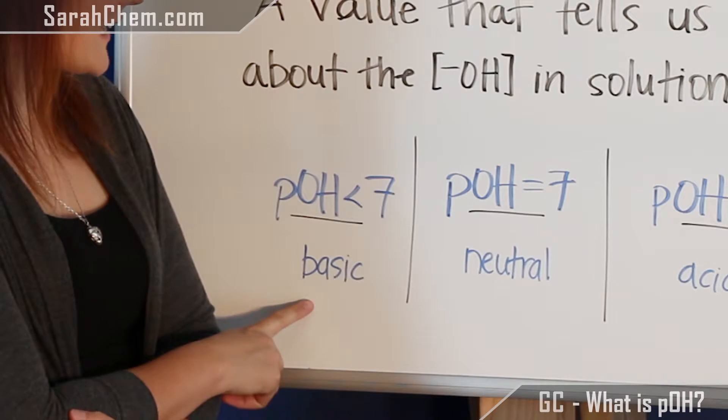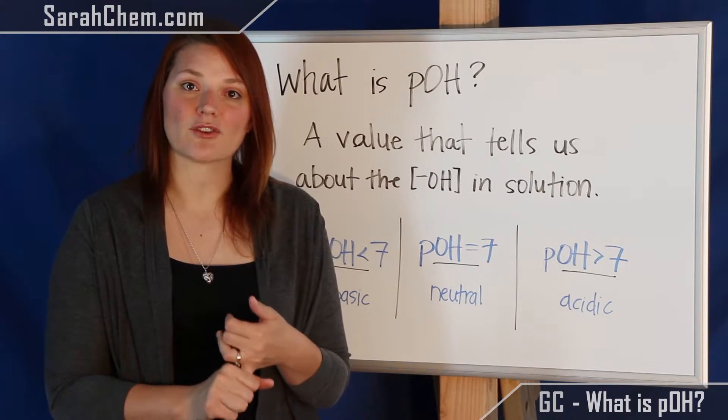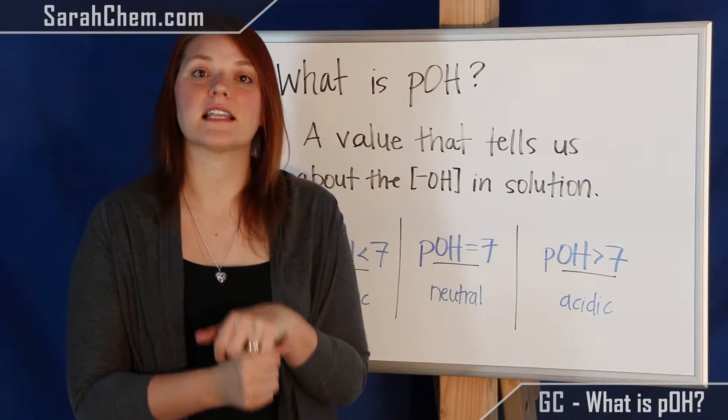So here, if pOH is less than 7, we have a basic solution, meaning we have more hydroxide than H+ ions in solution.